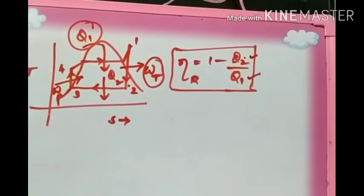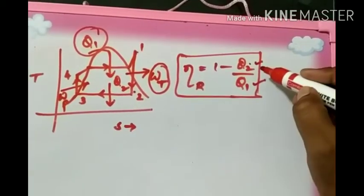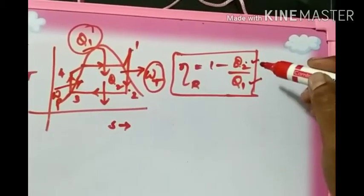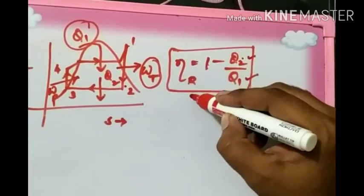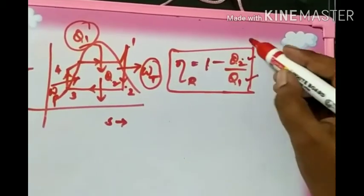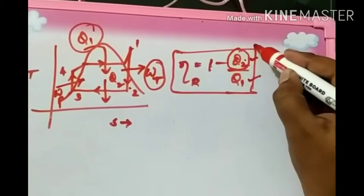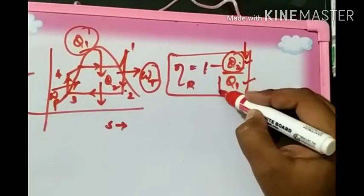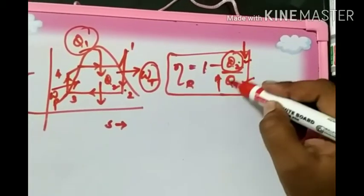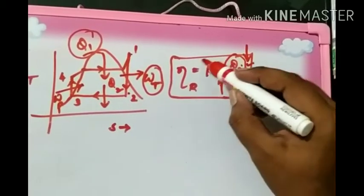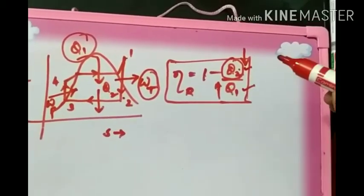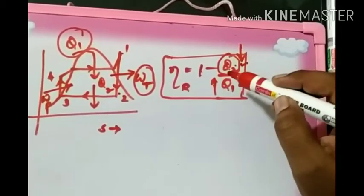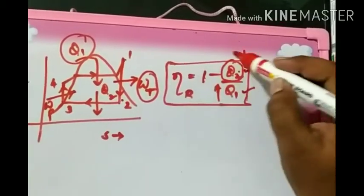From this expression it is very clear that the efficiency of the Rankine cycle is more when the value of Q2 is less and the value of Q1 is more. If these two conditions are met, then obviously efficiency will be increased. I will let you know how exactly we can achieve these two tasks a little later.